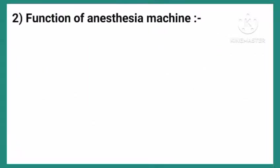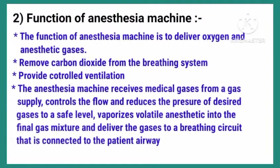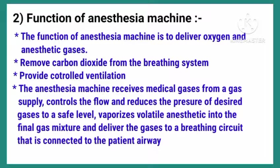Function of Anesthesia Machine. The function of the anesthesia machine is to deliver oxygen and anesthetic gases, remove carbon dioxide from the breathing system, and provide controlled ventilation. The anesthesia machine receives medical gases from a gas supply, controls the flow and reduces the pressure of desired gases to a safe level, vaporizes volatile anesthetic into the final gas mixture, and delivers the gases to a breathing circuit connected to the patient airway.